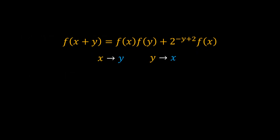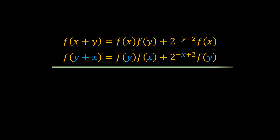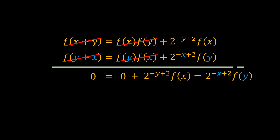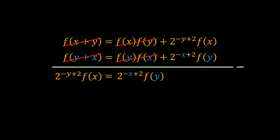In the first method, we replace x with y and y with x, giving us a second equation. We then subtract the first equation from the second. This cancels out f(x+y) and f(x)·f(y), leaving a simplified expression, which can be written divided by 2, then multiplied by 2 to the power of x+y.